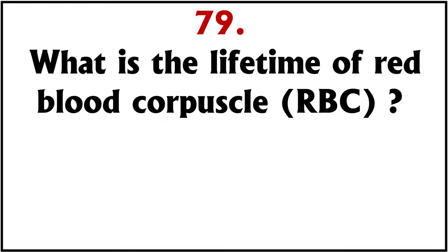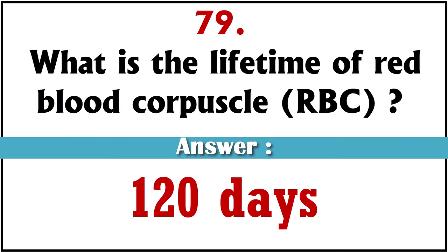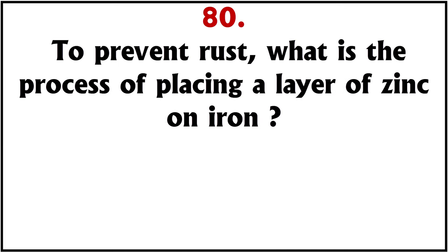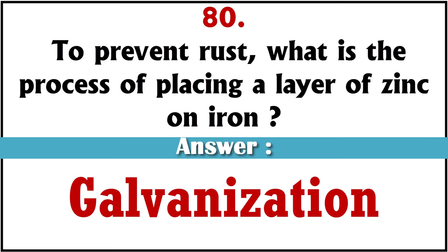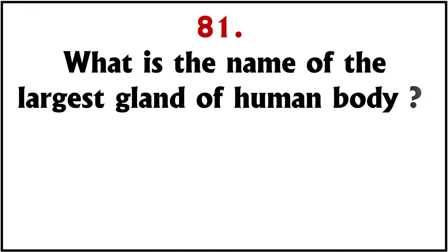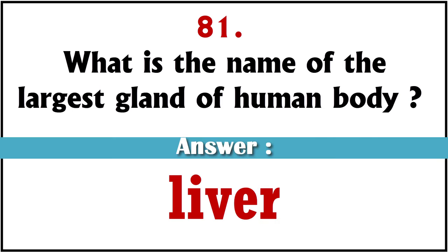What is the lifetime of a red blood cell (RBC)? 120 days. To prevent rust, what is the process of placing a layer of zinc on iron called? Galvanization. What is the name of the largest gland of the human body? Liver.